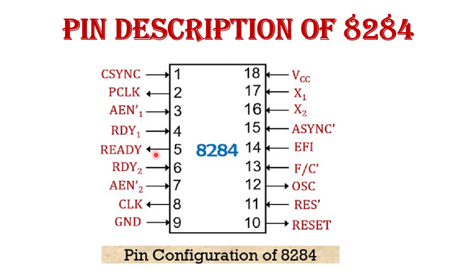Pin 5 is the READY output pin generated by the 8284, connected to the 8086 or 8088 ready input. This signal is synchronized with the RDY1 or RDY2 inputs. Pin 2 is the PCLK (peripheral clock) output pin. This peripheral clock signal frequency is one-sixth of the crystal frequency, and is given to peripheral devices that require a lower frequency output, such as the 8254. Pin 1 is the clock synchronization (CSYNC) input pin, used to allow several 8284 chips to be connected together and synchronized.